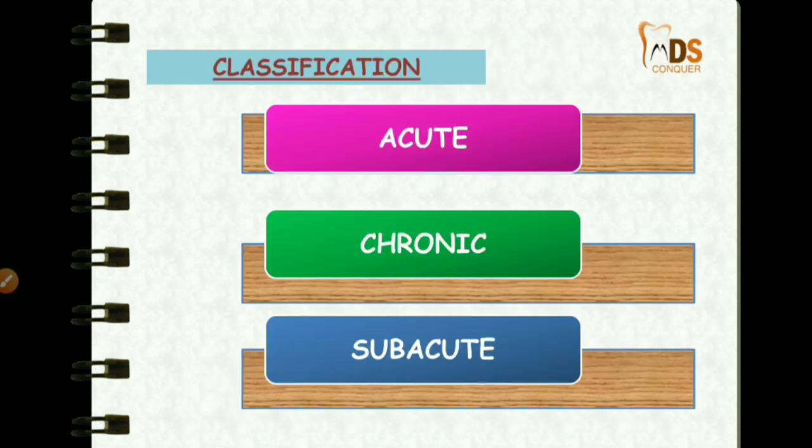If you see the classification, there are three types of inflammation: acute, chronic, and subacute. Acute has a short duration, whereas chronic has a long duration, and subacute is an intermediate term which comes between the acute and the chronic inflammations.